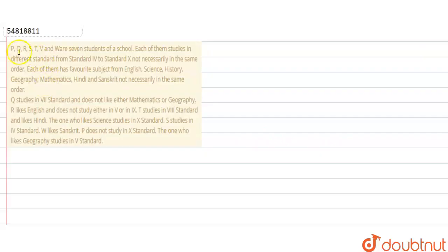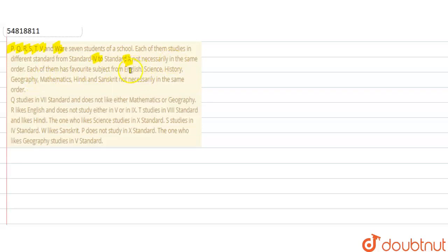Hello everyone. The question is: P, Q, R, S, T, V and W are 7 fresh students of our school. Each of them studies in a different standard from standard 4th to 10th, not necessarily in the same order. Each of them has a favorite subject from English, Science, History, Geography, Mathematics, Hindi and Sanskrit, not necessarily in the same order.